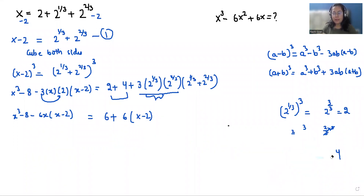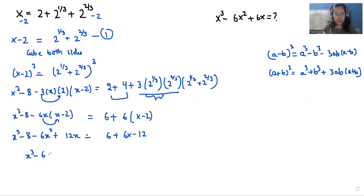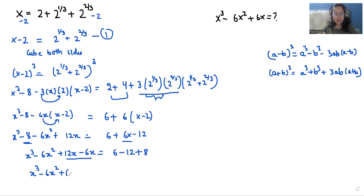Now expanding: x³ minus 8 minus (6x² minus 12x) equals 6 plus 6(x minus 2), which gives 6 plus 6x minus 12. Collecting all variable terms together and constants together: x³ minus 6x² plus 12x, then moving 6x to the other side gives minus 6x, equals 6 minus 12 plus 8. That is: x³ minus 6x² plus 6x equals minus 6 plus 8 = 2.